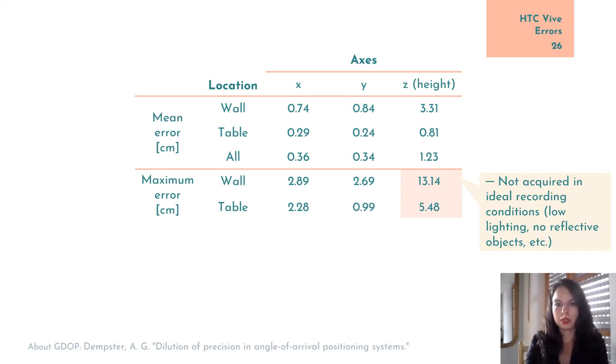But slightly more worrying were the maximum errors. Although they usually remained quite low, there were two measurement points on the wall in one dataset, which had an unusual Z axis error of 13.14 cm.